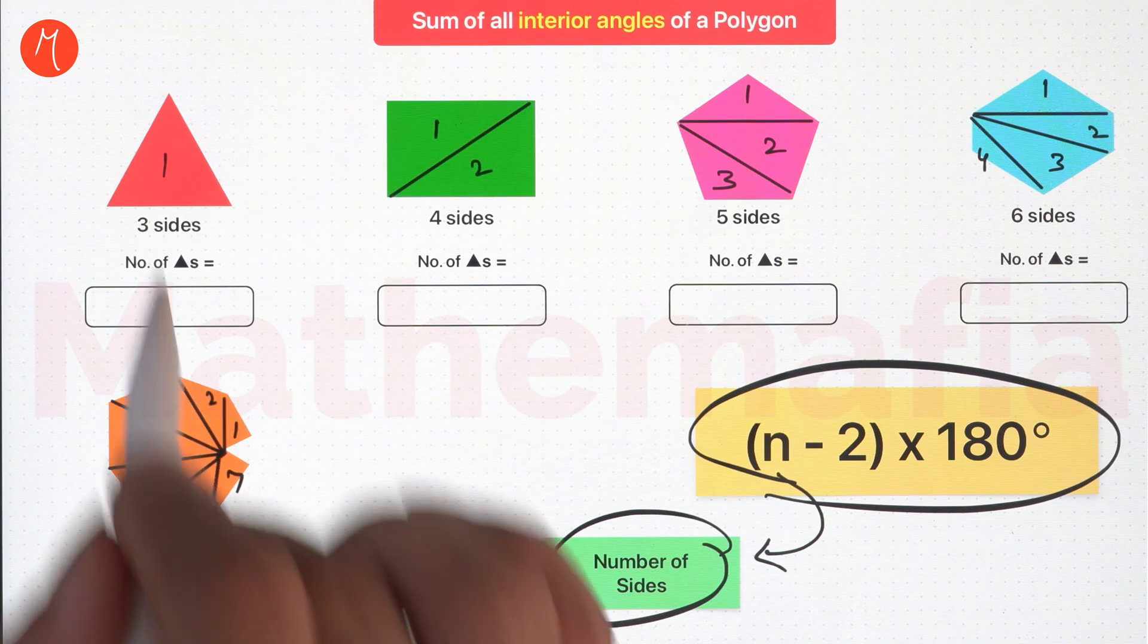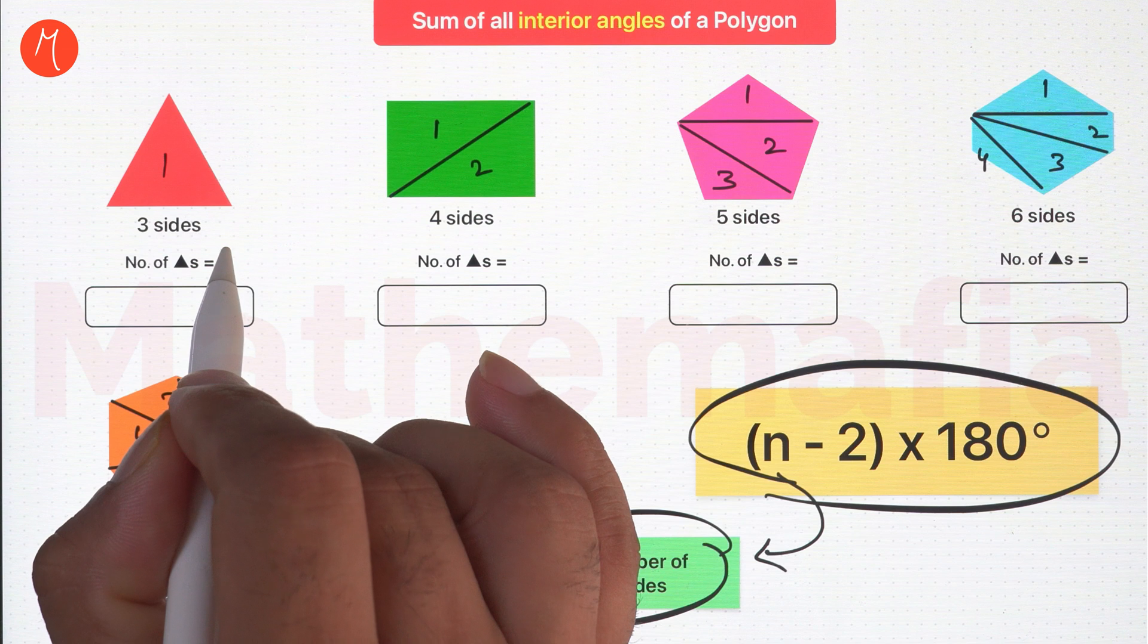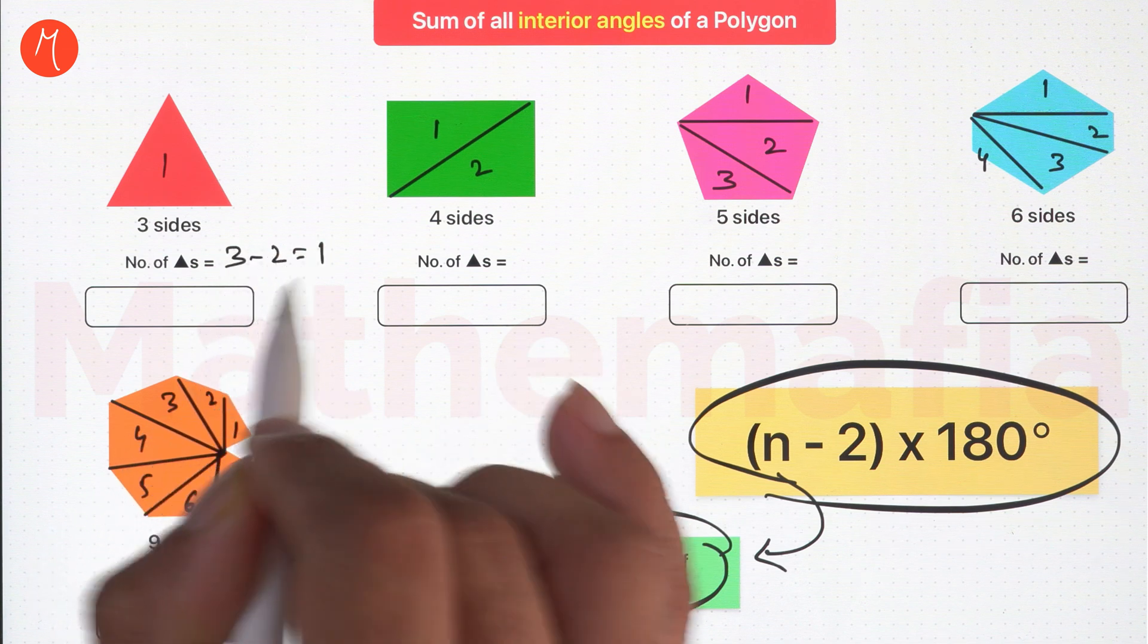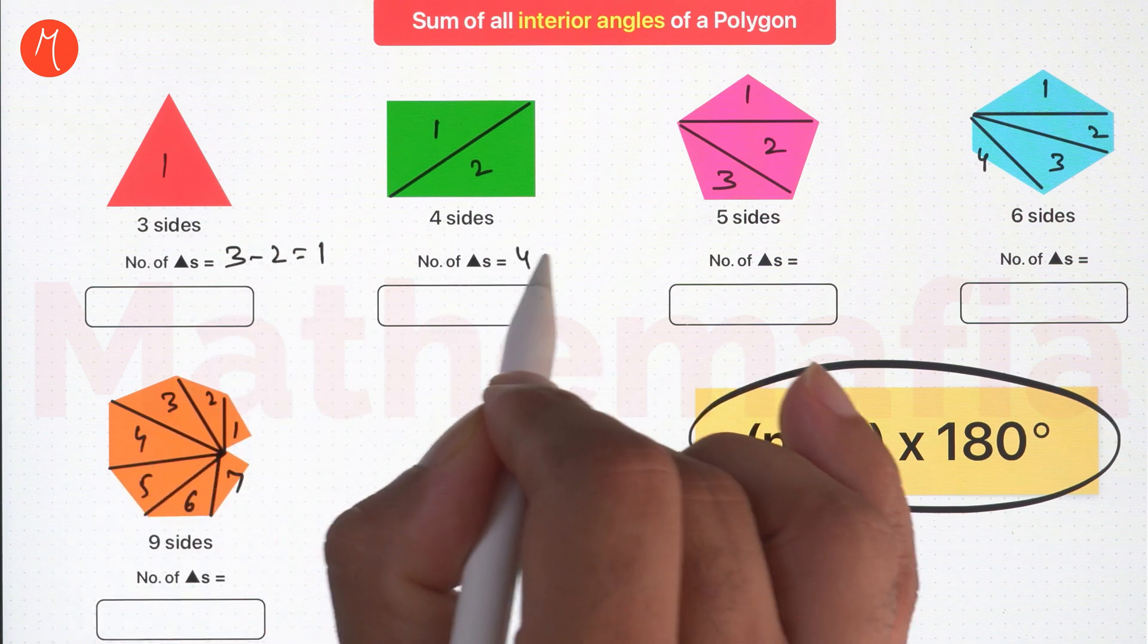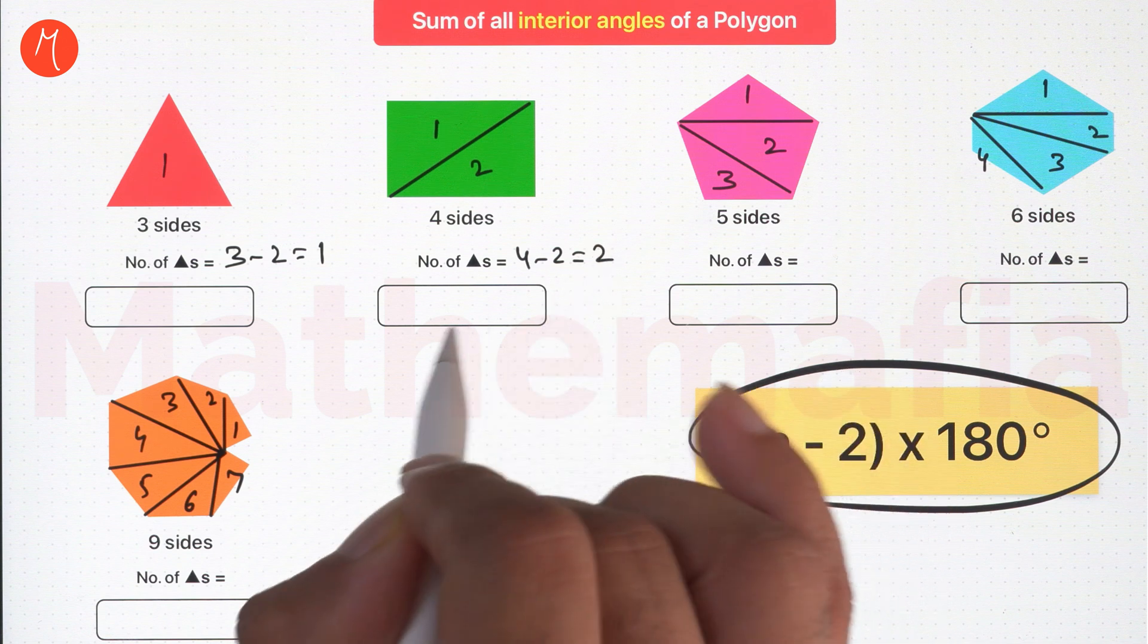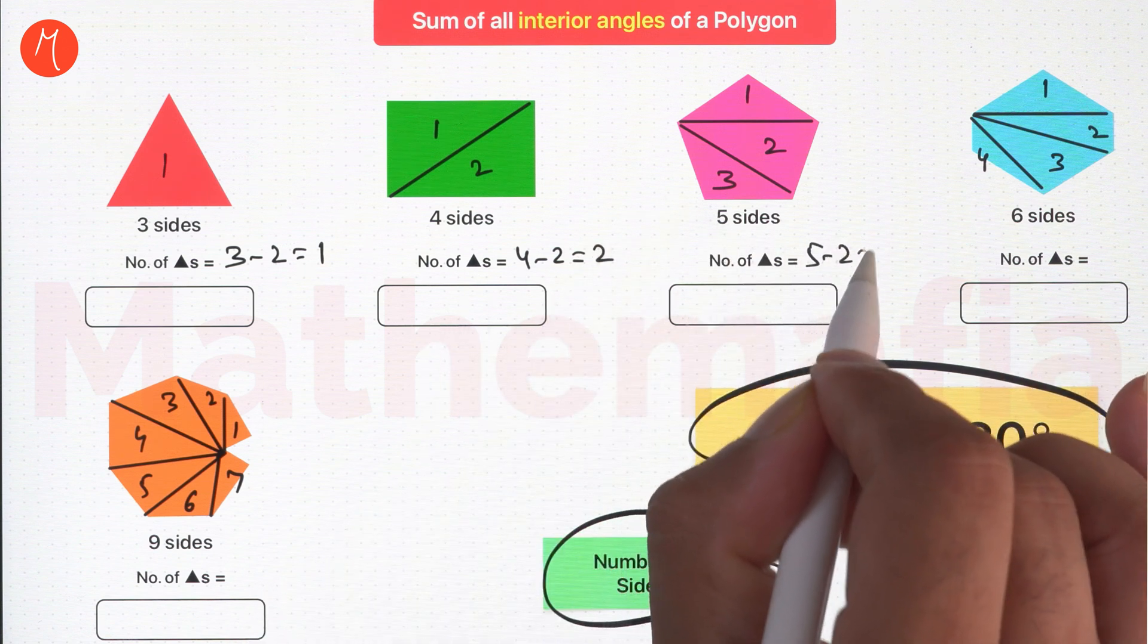Now let us observe the pattern here. Three sides, three minus two, one triangle. Four sides, four minus two, two triangles. Five sides, five minus two, three triangles.